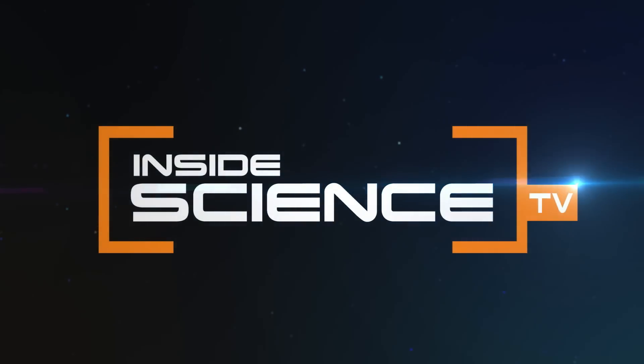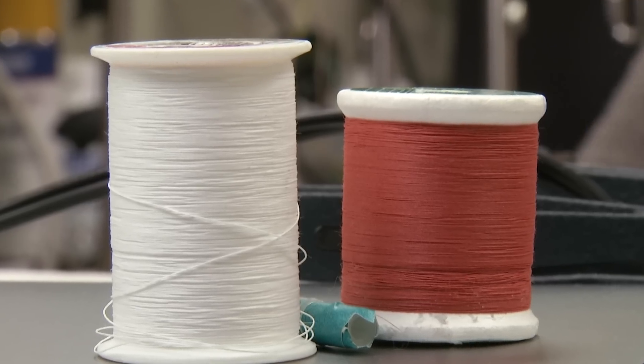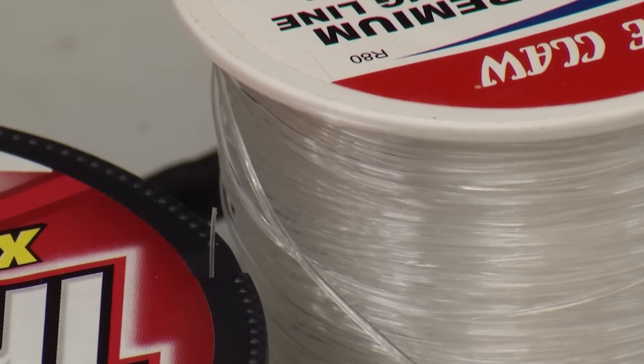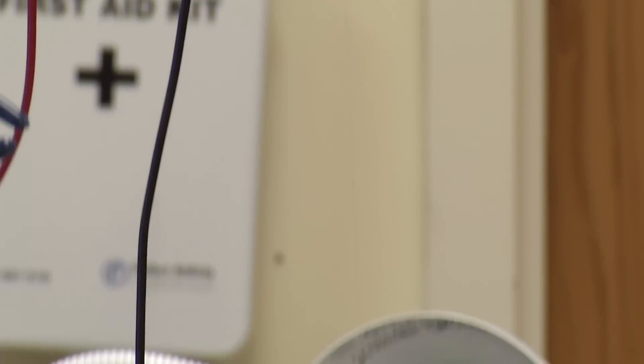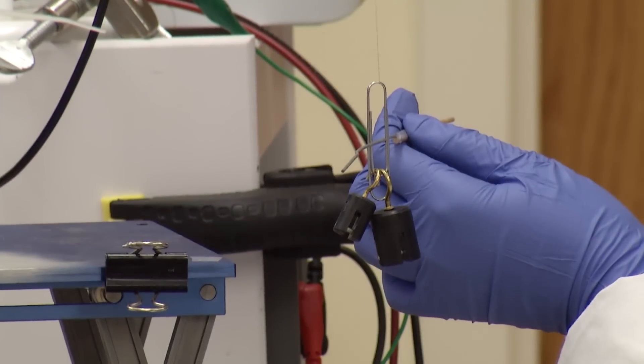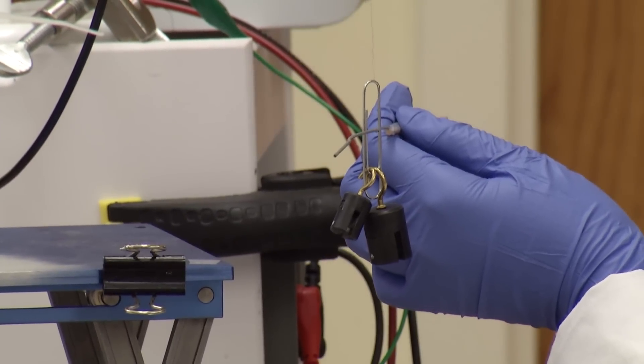Inside Science TV. What can you make with sewing thread and fishing line? Well, these. Material scientists say they can create artificial muscles.